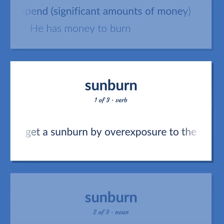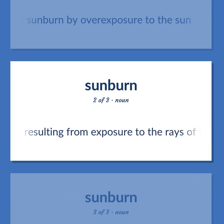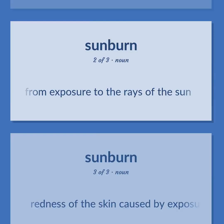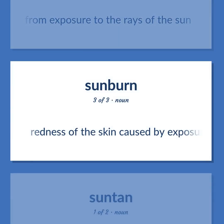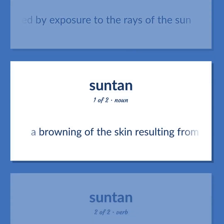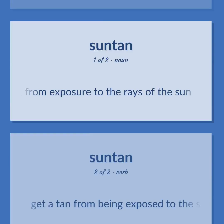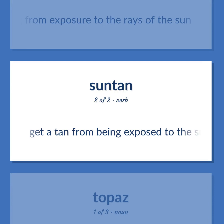Get a sunburn by overexposure to the sun. A browning of the skin resulting from exposure to the rays of the sun. Redness of the skin caused by exposure to the rays of the sun. Get a tan from being exposed to the sun.